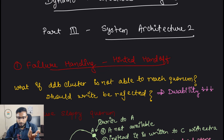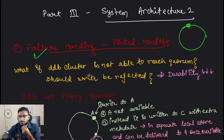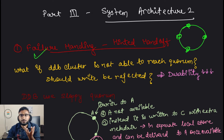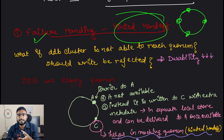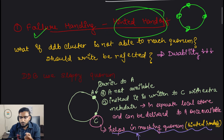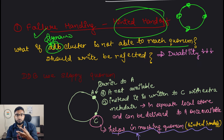We will be continuing with failure handling. In your consistent hashing ring where you maintain all the nodes, it is possible that some of the nodes are unavailable. So how will you handle those kinds of failures? We use something called hinted handoff. We also need to discuss what happens if the Dynamo cluster is not able to reach quorum - for example, if some nodes are down.